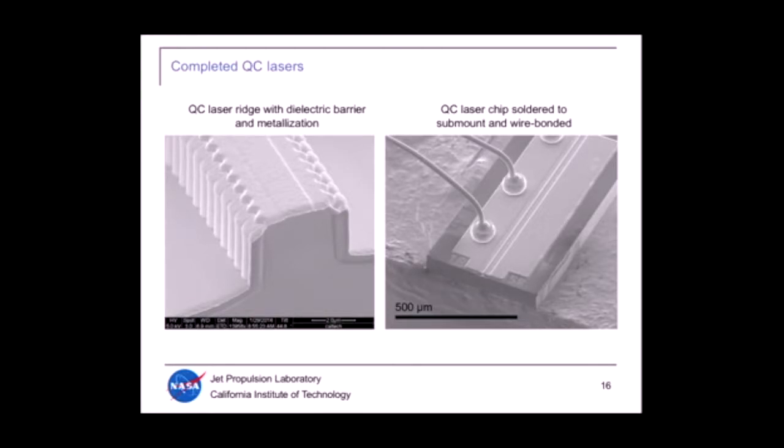After we fabricate the laser ridge we coat it in a dielectric. We've done both silicon nitride and sputtered aluminum nitride which works well because it has good thermal conductivity and is transparent at longer wavelengths. We use lithography to open up a stripe on top of the laser ridge, do a final metallization for top contact. What's shown here is a completed laser device where we've cleaved a single chip. This laser emission facet at the end of this ridge is right here in this picture. We've soldered that to a submount for packaging and then wired up the laser top contact with wire bonding.